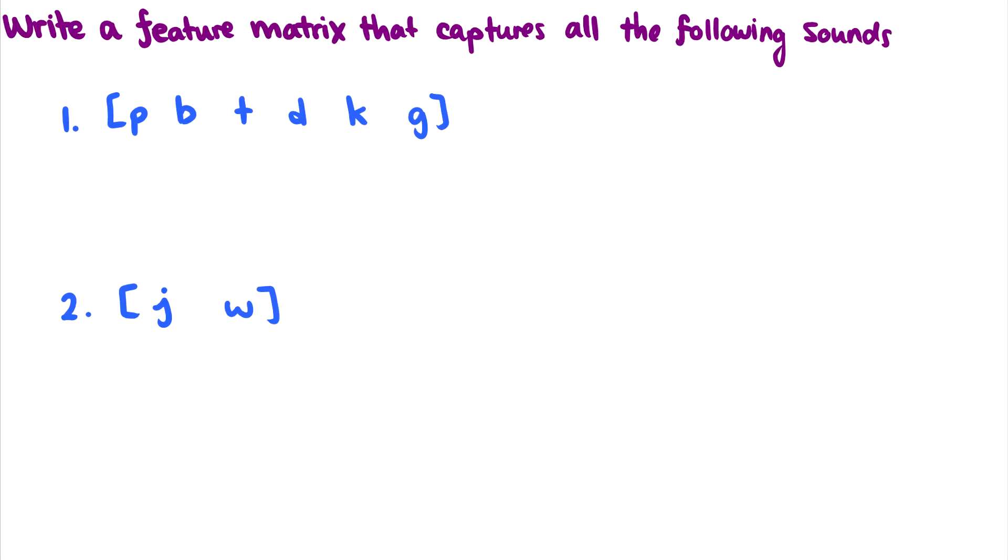In fact, let's use that to write feature matrices to capture these natural classes. So for instance, in the first one, I have p, b, t, d, k, and g. What is this? This is the natural class of stops. So the question is, which features do I need to capture the natural class of stops?